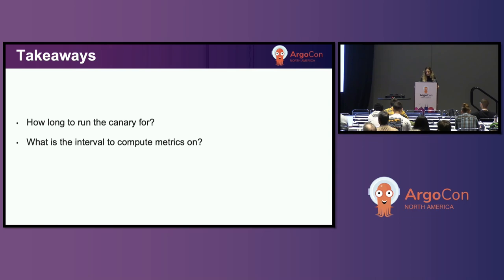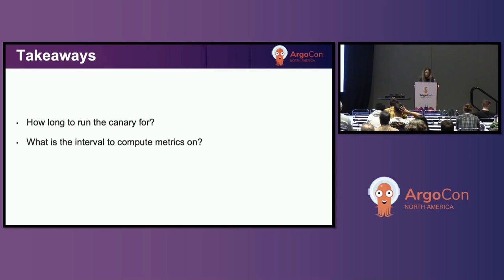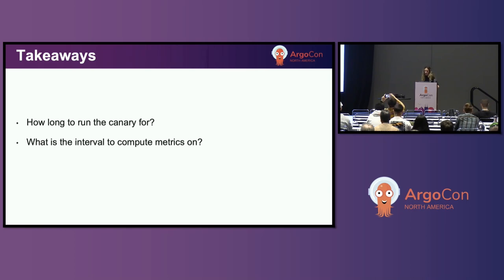Let's look at some takeaways from running Rollout with analysis for the streaming application. The first is about how long to run the canary. It depends on the application — long enough for the metrics to be scraped and enough data points to be collected for your analysis. In our case, because it's a moderate traffic application scraping every 15 seconds, anywhere from 5 to 10 minutes is enough to assess whether the Rollout is healthy or not. Another consideration is how frequently you make changes to the application, because if you're running Rollouts for days and have frequent changes, you may still want to test each change one at a time, so delivery speed will be reduced.